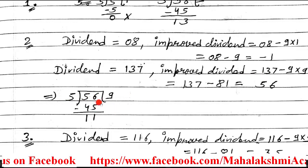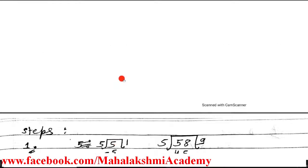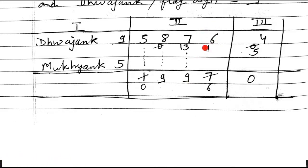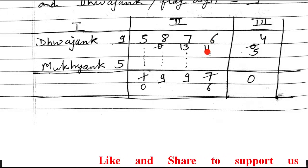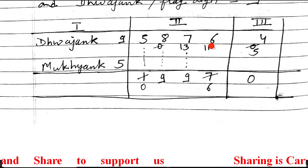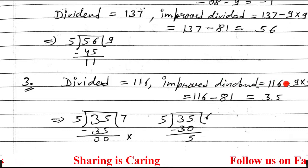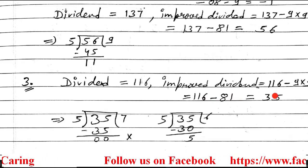Divide the improved dividend 56 by 5 — maximum up to 9. So 5×9=45, subtract to get remainder 11. Enter quotient 9 and remainder 11 in the table. The next dividend is 116. To find the improved dividend: 116 minus 9×9 = 116 minus 81 = 35. Since it is positive, you can divide it.